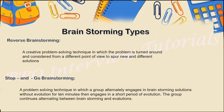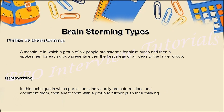Stop and go brainstorming is a problem-solving technique in which a group alternately engages in brainstorming solutions for about 10 minutes, then engages in a short period of evaluation, and the group continues alternating between brainstorming and evaluation. Stop and go means first they go with some idea, then they stop and discuss, then they go with another idea — keeping a separation between continuous brainstorming sessions.